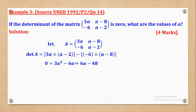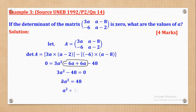Simplifying: the negative 6A and positive 6A cancel, leaving 3A squared minus 48 equal to 0. Taking 48 to the other side gives 3A squared = 48, then dividing both sides by 3 gives A squared = 16. Taking the square root of both sides gives A = plus or minus 4. Those are the two values of A.